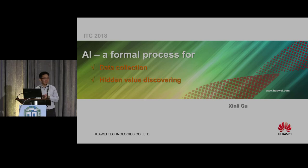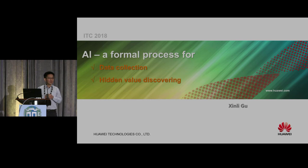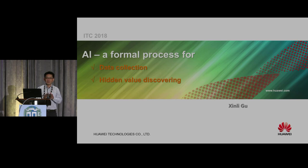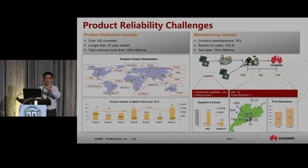My talk will be focused on how, in a system house — we produce network switching products — we use AI and see the business values. We started using AI as part of our process about seven or eight years ago, and we see the value today in how we archive all the data we need from different perspectives: from design, our suppliers, our manufacturing, even down to the field and customer returns. We record all of that data and try to link it together, then use the data to discover extra value, which in the past was typically very hard.